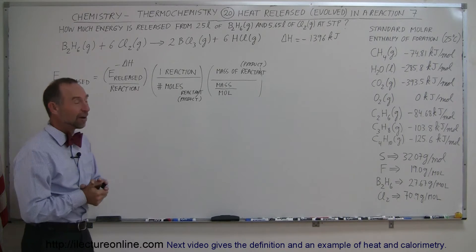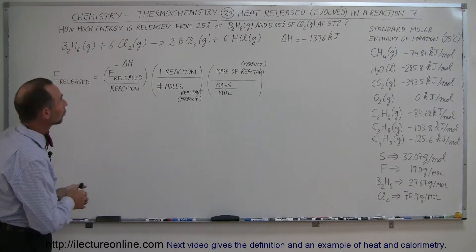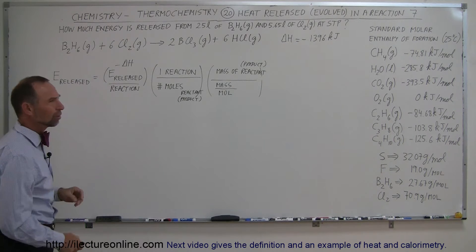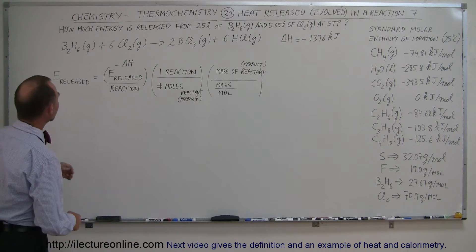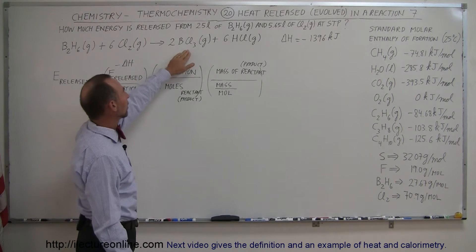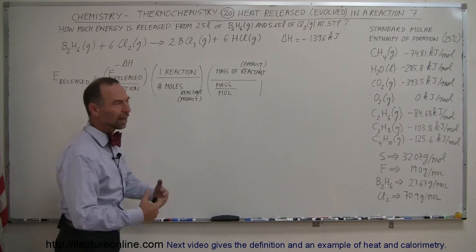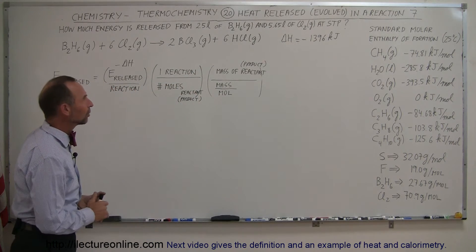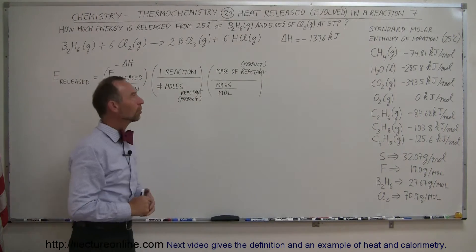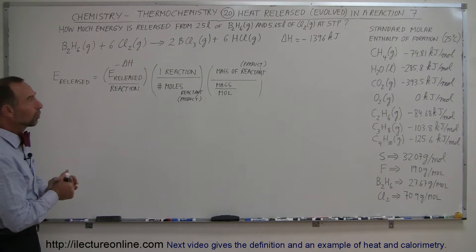Here we have another example of how we calculate the energy release in a reaction. We take diborane, also called boron hexahydride, and mix it with chlorine gas, ending up with boron tetrachloride and hydrochloric acid in gaseous form. A lot of heat is released. The enthalpy of this reaction is -1396 kilojoules, meaning it's an exothermic reaction.